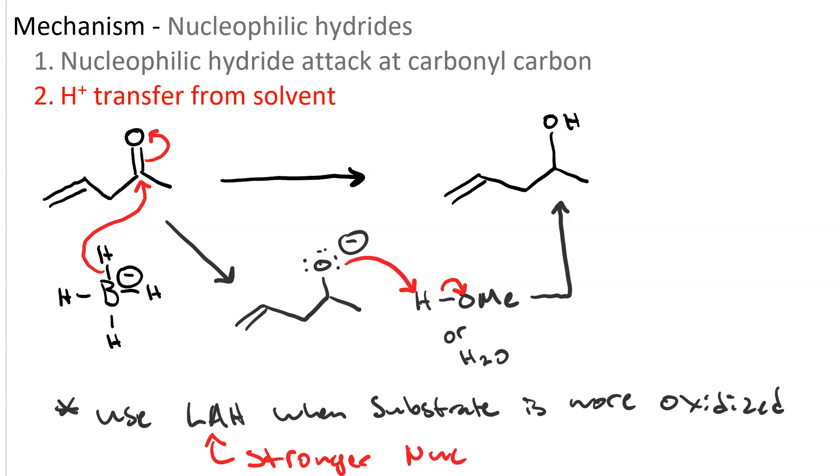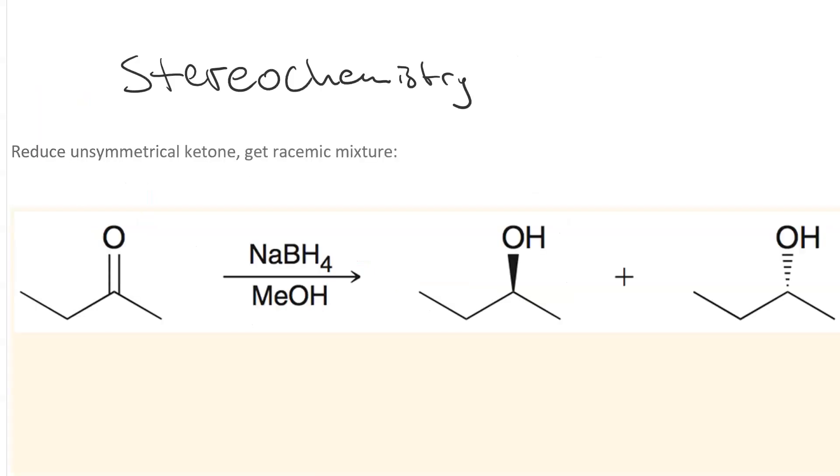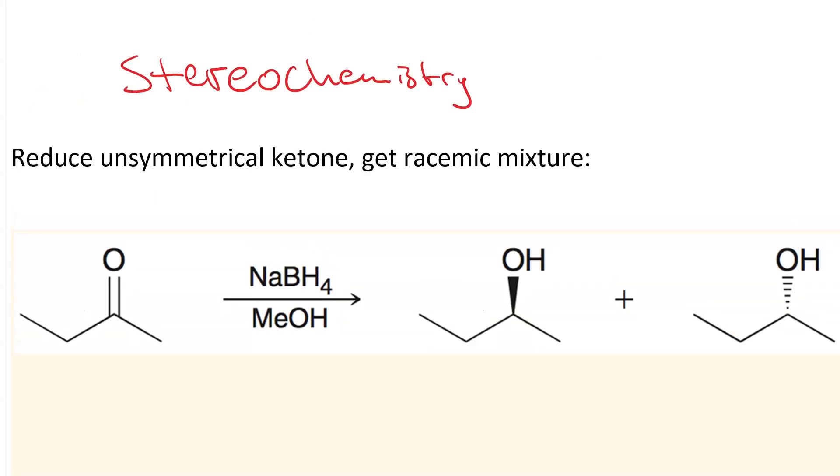Let's talk about the stereochemistry of reduction of a carbonyl. If your substrate is an unsymmetrical ketone, like in this case, 2-butanone, or you could also call it ethyl-methyl ketone, it's got an ethyl group on one side and a methyl on the other.